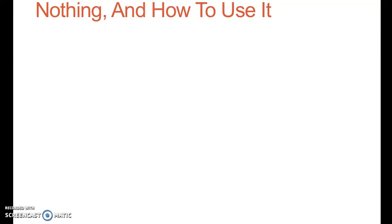Let's talk for a minute about nothing — specifically, how to use nothing on the screen. The problem is, in some ways, even though it can be very difficult to get started with filmmaking, filmmaking can be too easy. A filmmaker can get lazy because you don't have to create a background. You can just point the camera and stick an actor in front of whatever. The challenge then is thinking about screen composition, and specifically how to use the absence of something. Let's look at a couple of examples.